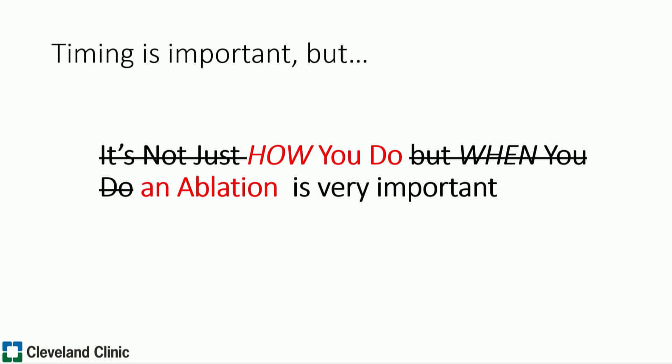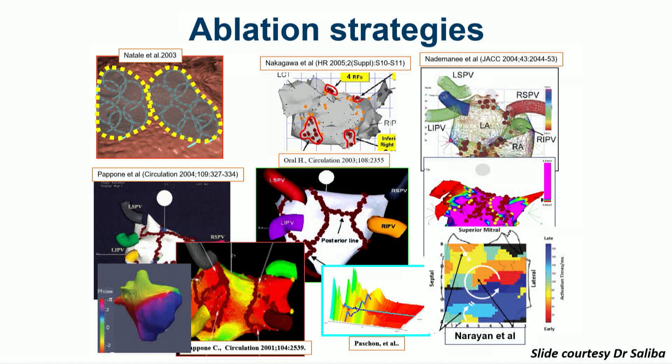Timing is important, but it's also important how you do an ablation. Over the past 15 to 20 years, we've done AFib ablation in many ways. Lots of strategies have been proposed, and everybody presents data, but at the end of the day, everybody's achieving similarly similar rates of success. Going from CAFE to dominant frequencies to rotor ablations, ablation of the posterior wall — we're still not achieving good outcomes, and that tells you that we still don't fully understand AFib.